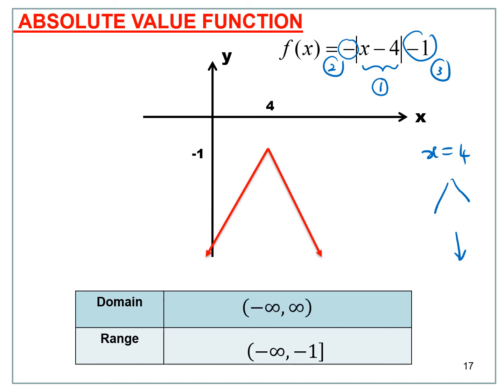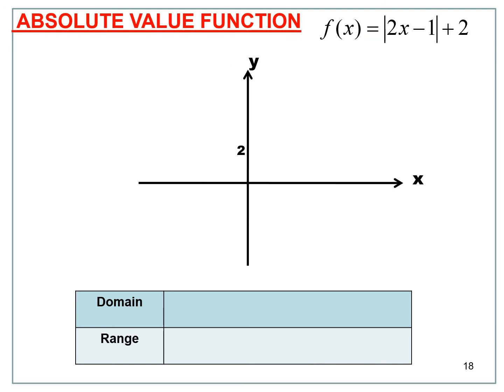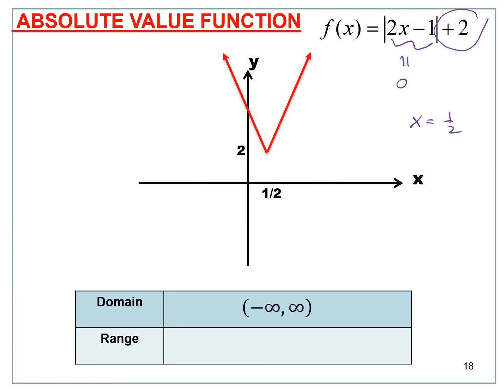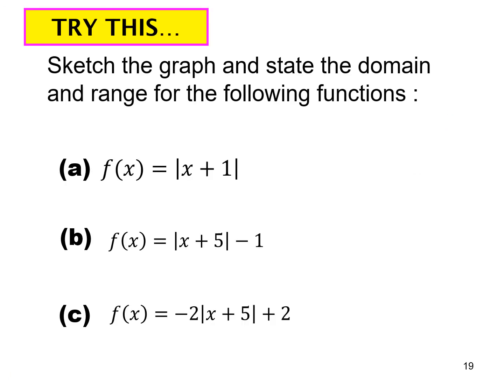For f(x) = |2x - 1| + 2, set 2x - 1 = 0 to get x = 1/2 as the symmetry axis. The +2 shifts the graph 2 units up, giving a vertex at (1/2, 2). The domain is negative infinity to infinity, and the range is 2 to infinity. This is an exercise for you to try.